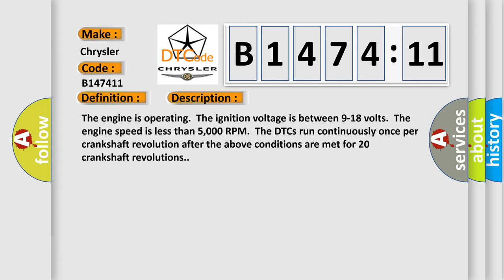And now this is a short description of this DTC code. The engine is operating. The ignition voltage is between 9 to 18 volts. The engine speed is less than 5000 RPM. The DTCs run continuously once per crankshaft revolution after the above conditions are met for 20 crankshaft revolutions.